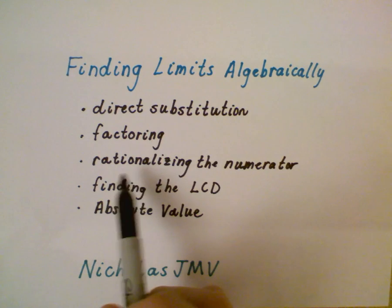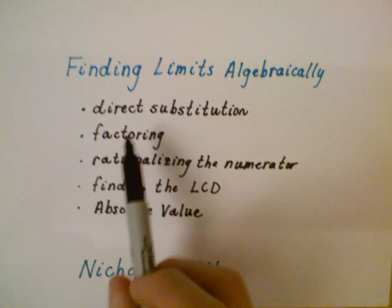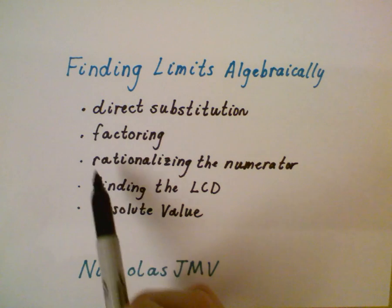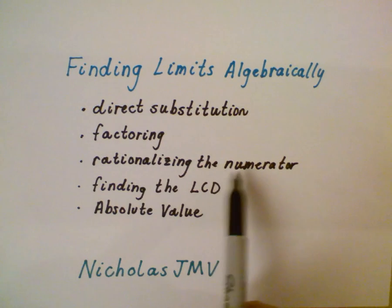So again, the idea here is that we're going to always try to start with direct substitution and then you kind of just work your way down to see if any of these things are possible. So this example is going to be rationalizing the numerator. So let's look at an example.